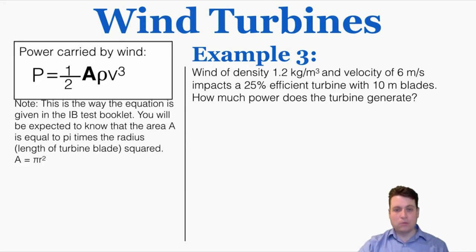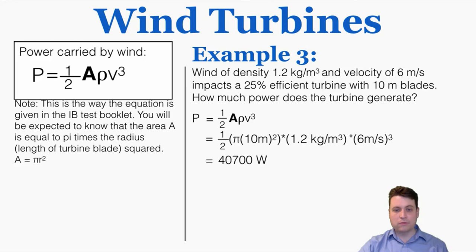Example 3: Wind of density 1.2 kg/m³ and velocity 6 m/s impacts a 25%-efficient turbine with 10-meter blades. How much power does the turbine generate? First, find the power delivered by the wind: P = ½ × π(10)² × 1.2 × 6³ = 40,700 W. Then apply efficiency: power out = 0.25 × 40,700 = 8,140 W. That's how much power the turbine generates, and that's what you need to know about wind turbines and calculating their power.